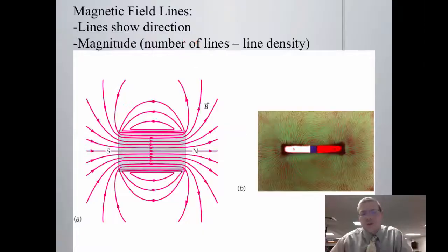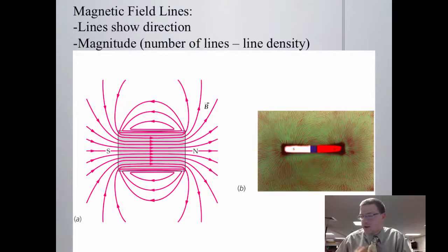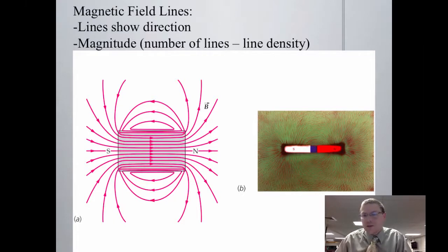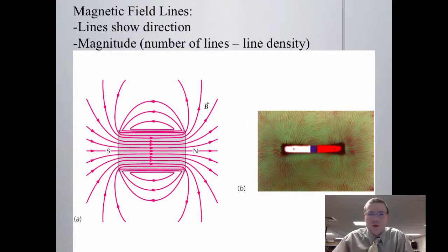For permanent bar magnets, they do still have closed loops of magnetic field just like a current-carrying wire. The field decreases with distance. The direction of the magnetic field points in the same direction that a magnetic field loop forms around a current wire.